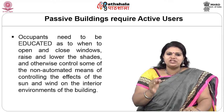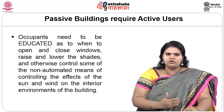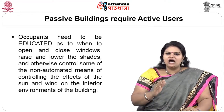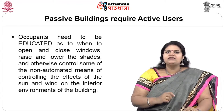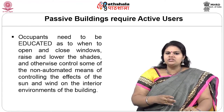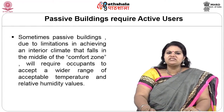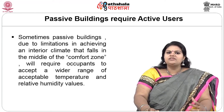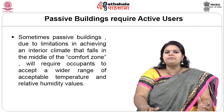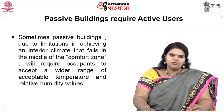Occupants need to be educated as to when to open or shut windows, raise and lower shades, and otherwise control some of the non-automated means of controlling the effects of sun and wind on the interior environments of the building. Sometimes passive buildings, due to limitations in achieving an interior climate in the middle of the comfort zone, will require occupants to accept a wider range of acceptable temperature and relative humidity values.